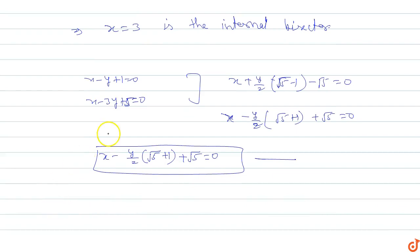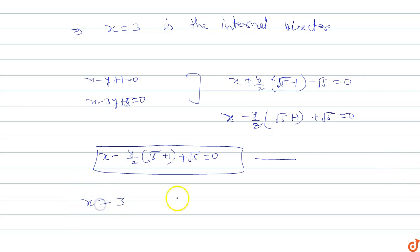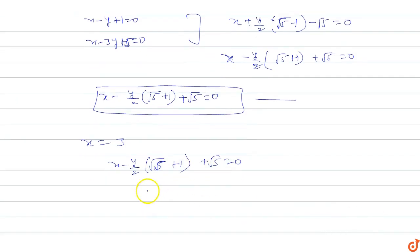We know that the incenter is the point of intersection of the internal bisectors. So we take the point of intersection of x = 3 and x - y/(2√5) + 1 + √5 = 0. The x-coordinate of the incenter will be 3.